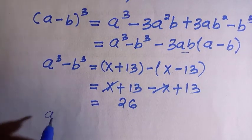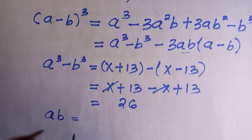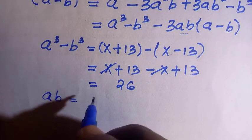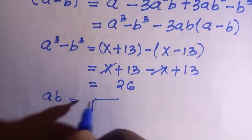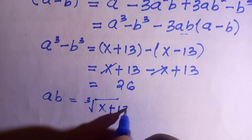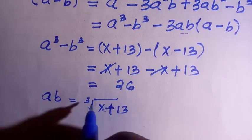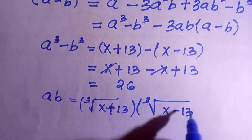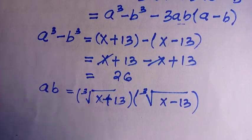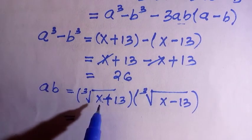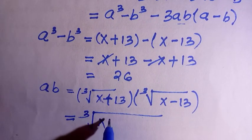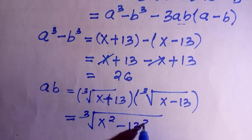Next we need ab. We have a equals the cube root of x plus 13 and b equals the cube root of x minus 13. Since both are cube roots, their product uses the difference of two squares rule, giving ab equals the cube root of (x² minus 13²), which simplifies to the cube root of (x² minus 169).